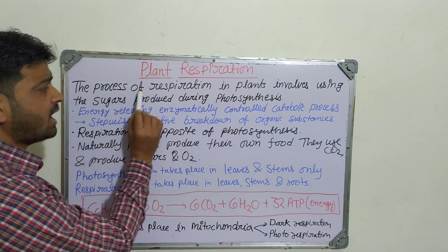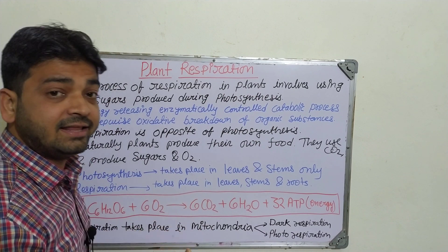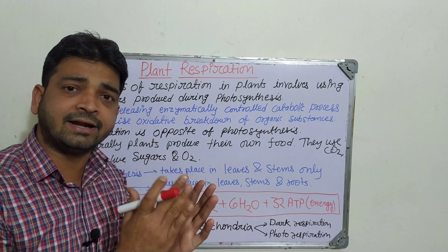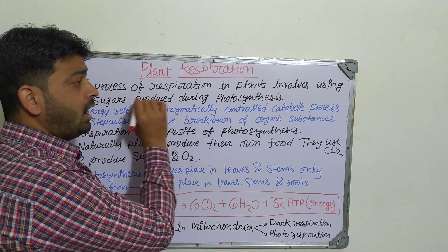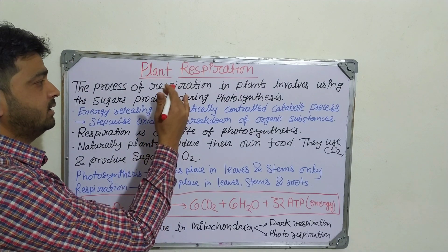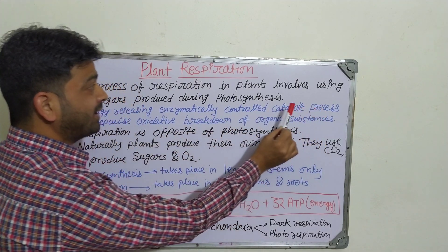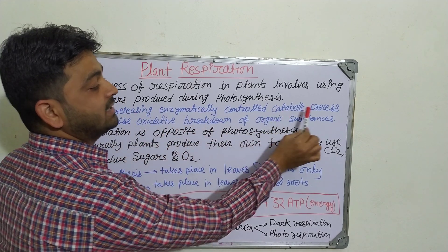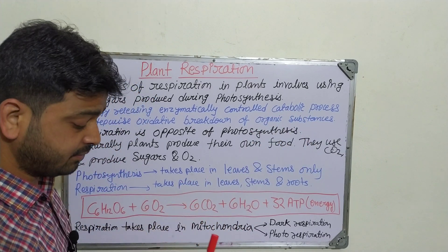Coming to plant respiration: the process of respiration in plants involves using the sugars produced during photosynthesis. In the last class we saw that plants use chlorophyll in their leaves, sunlight, water, and minerals to produce carbohydrates — that is, sugars. In respiration, those sugars are broken down in an energy-releasing, enzymatically controlled catabolic process — a step-wise oxidative breakdown of organic substances.